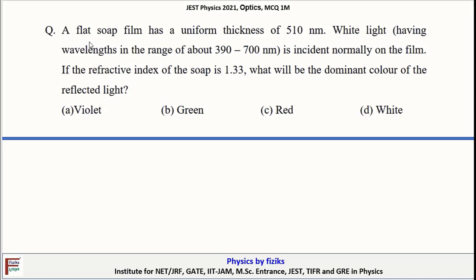A flat soap film has a uniform thickness of 510 nanometer. White light having wavelengths in the range of about 390 to 700 nanometer is incident normally on the film. If the refractive index of soap is 1.33, what would be the dominant color of the reflected light? We have to determine which color will be dominant in reflected light.